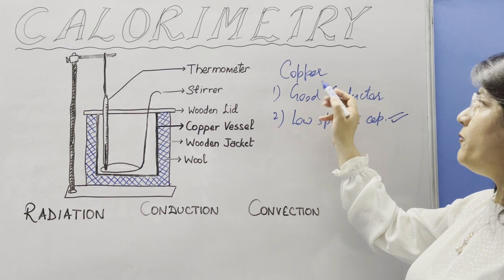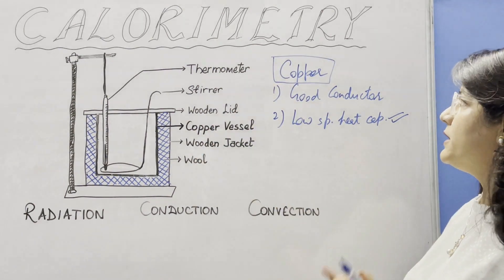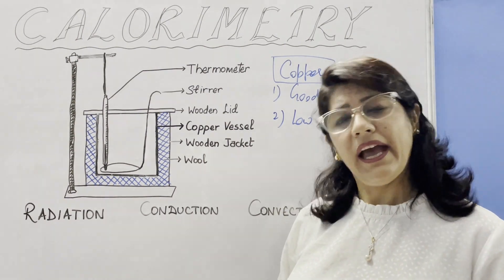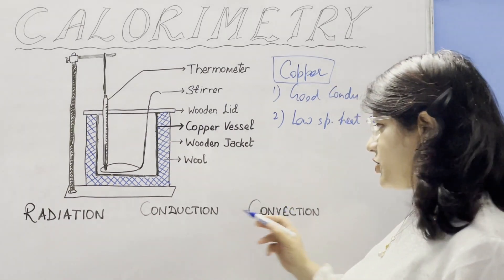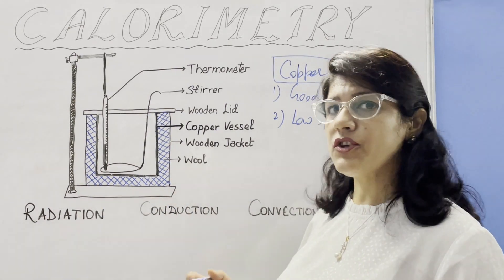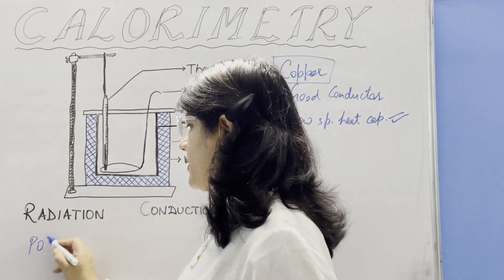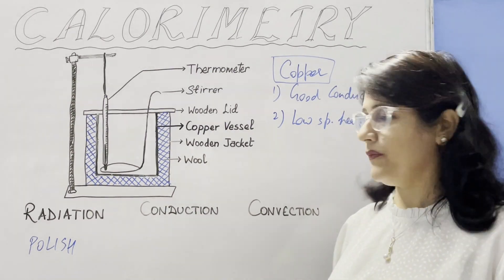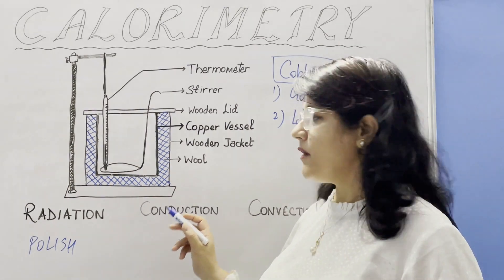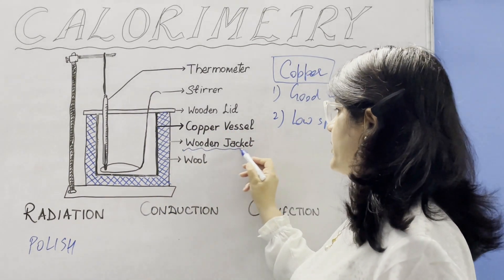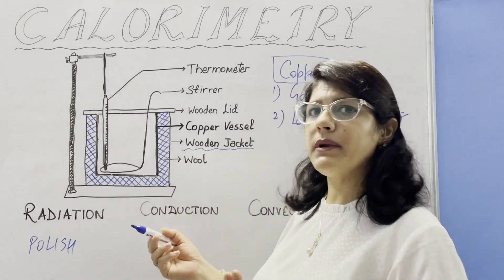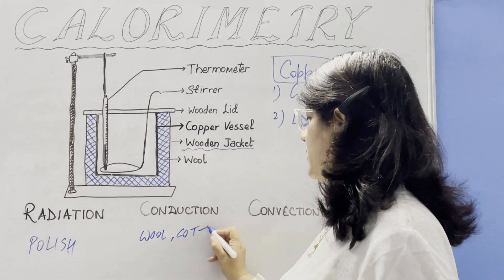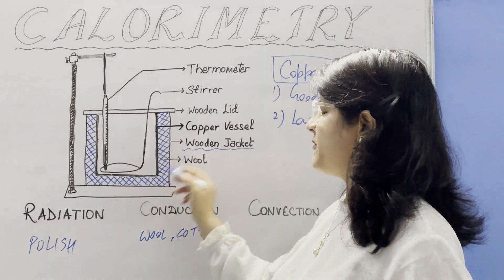Now, how can we prevent the three types of heat losses? The three types of heat losses are conduction, convection, and radiation. For radiation, we polish the inner and outer surfaces of the calorimeter. To prevent heat loss by conduction, we provide a wooden jacket, and some insulating material such as wool or cotton is filled in the free space.